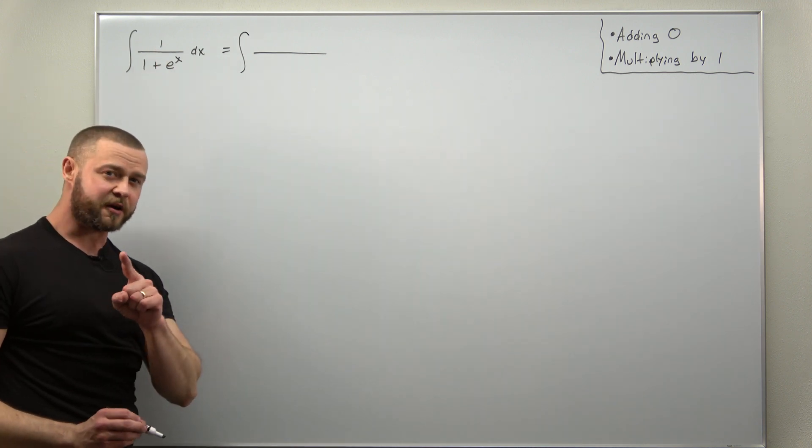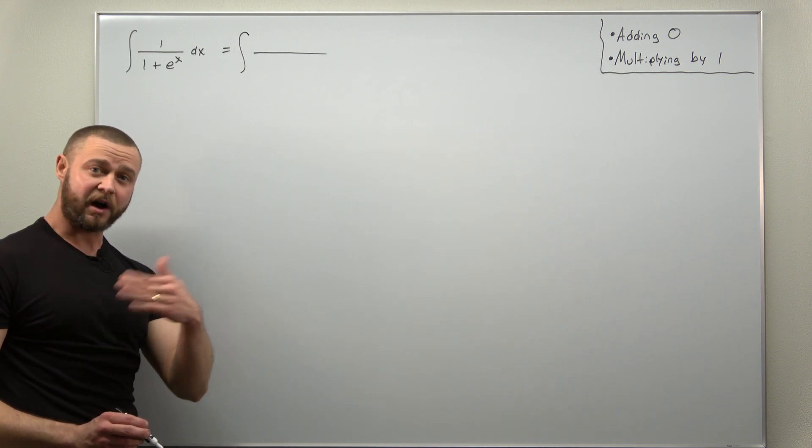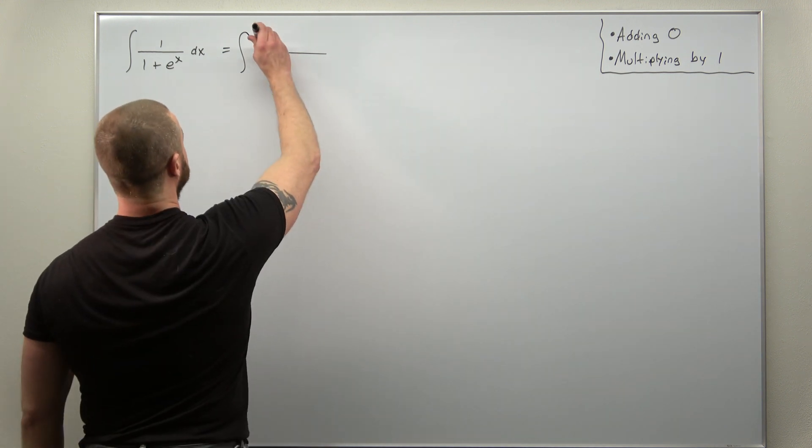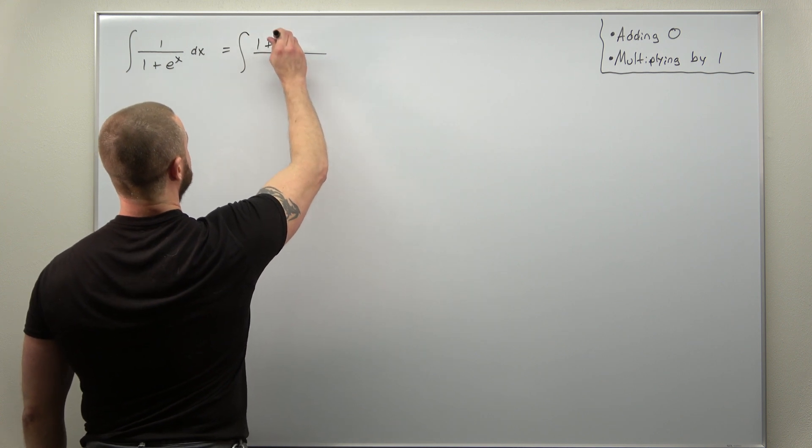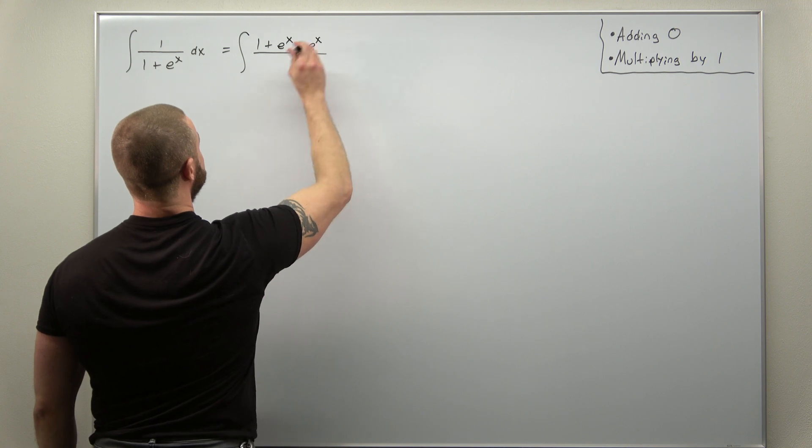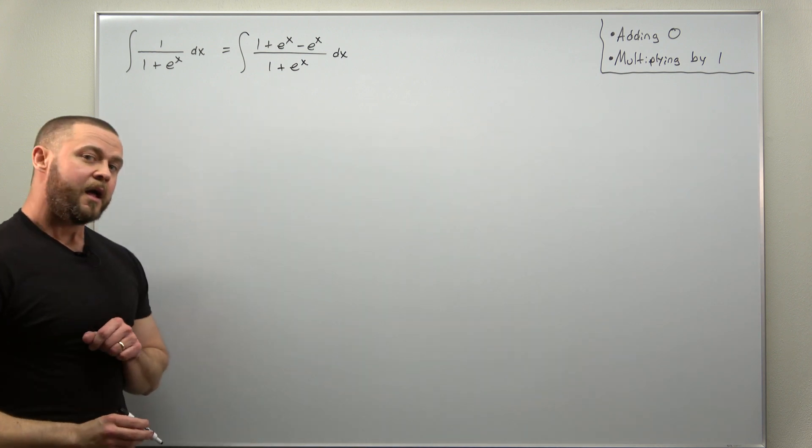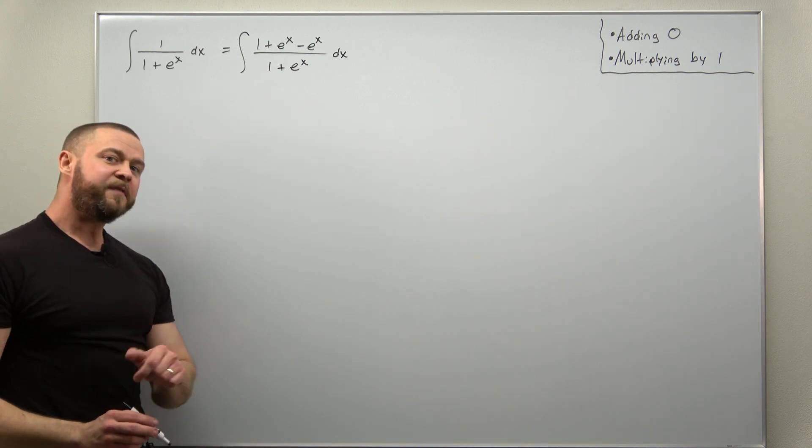So we're going to think of zero here as e to the x minus e to the x, a quantity minus itself. So we'll write the numerator as 1 plus e to the x. We're going to subtract e to the x and notice this will simplify it considerably.